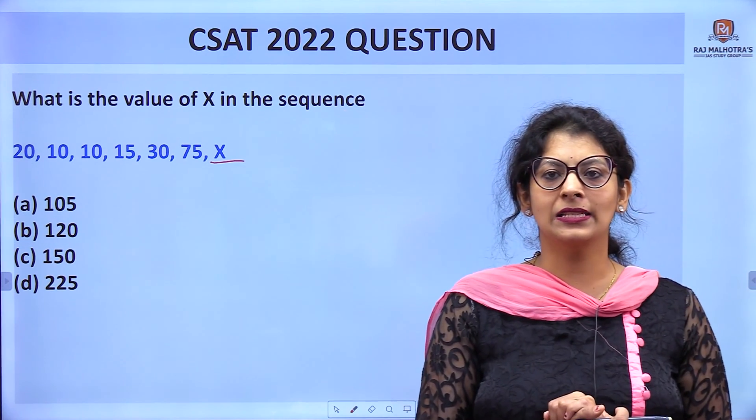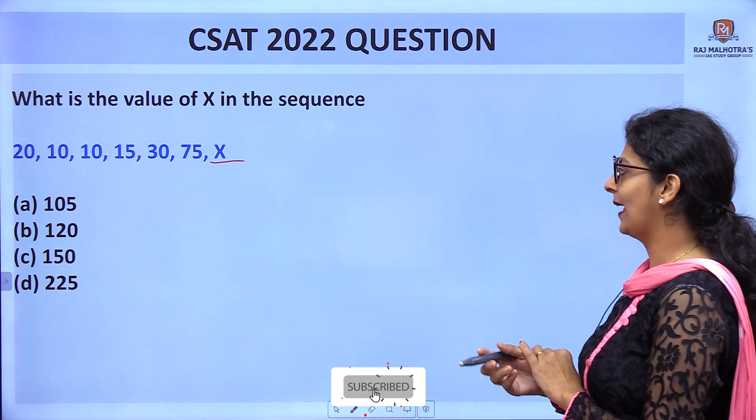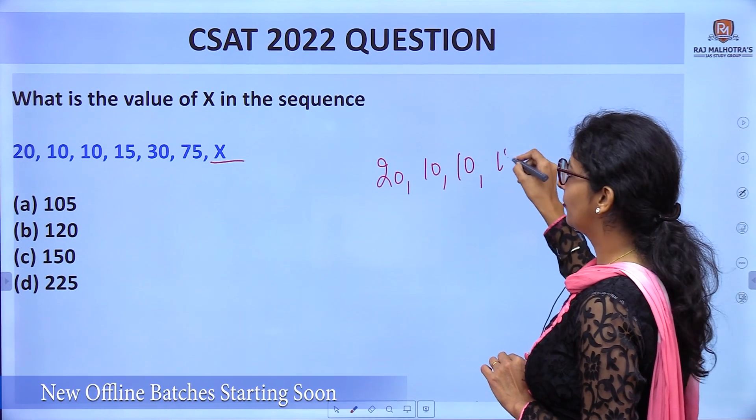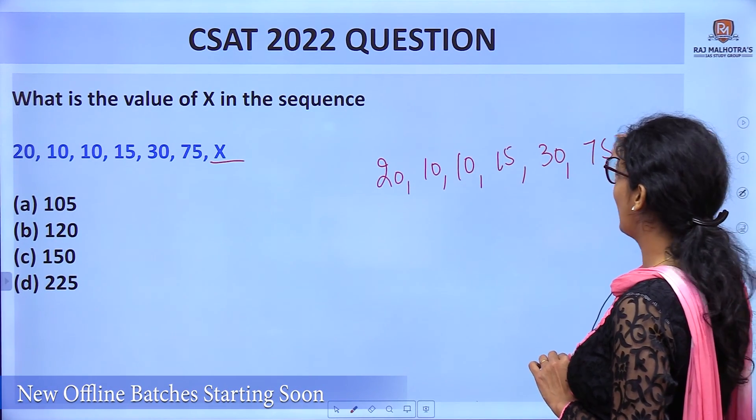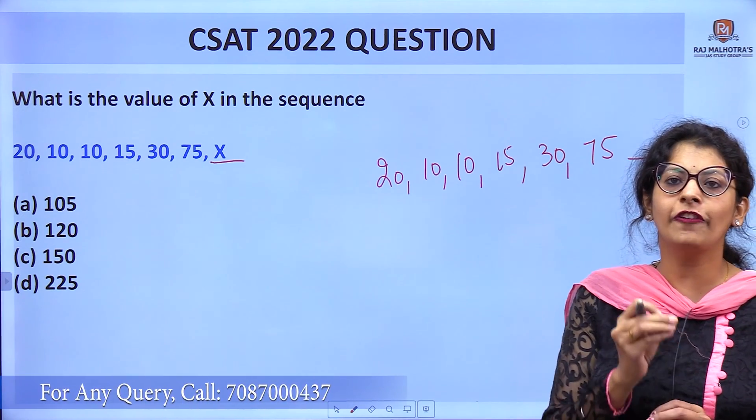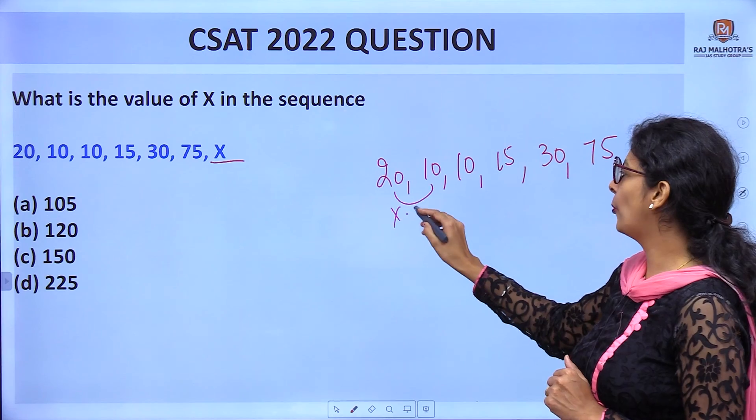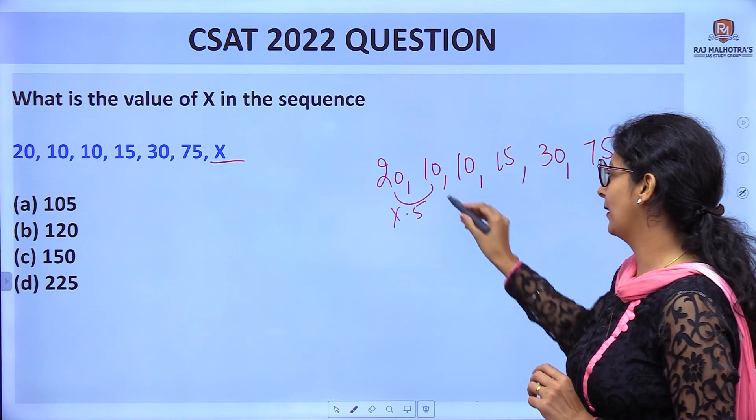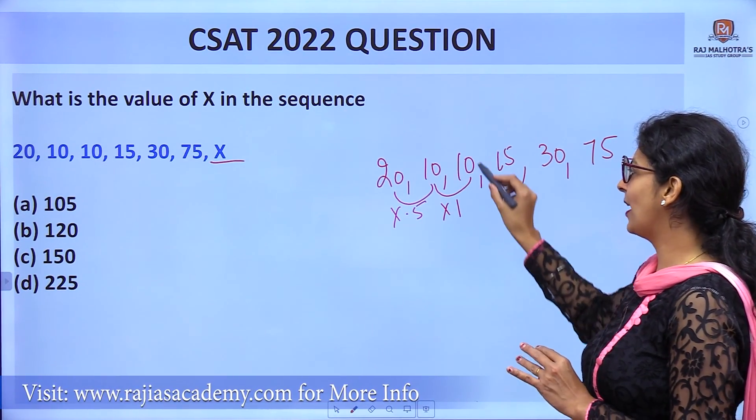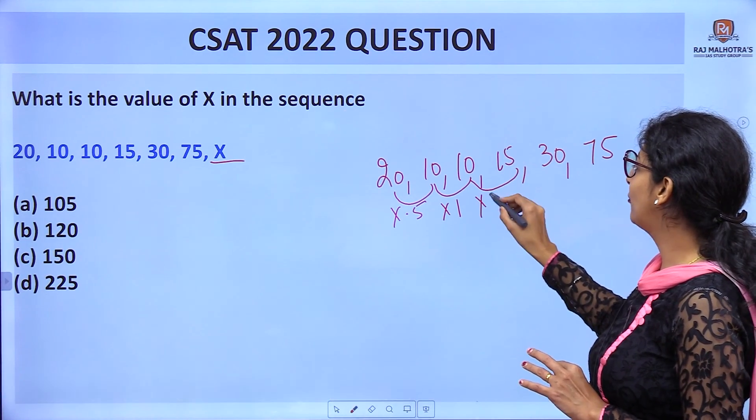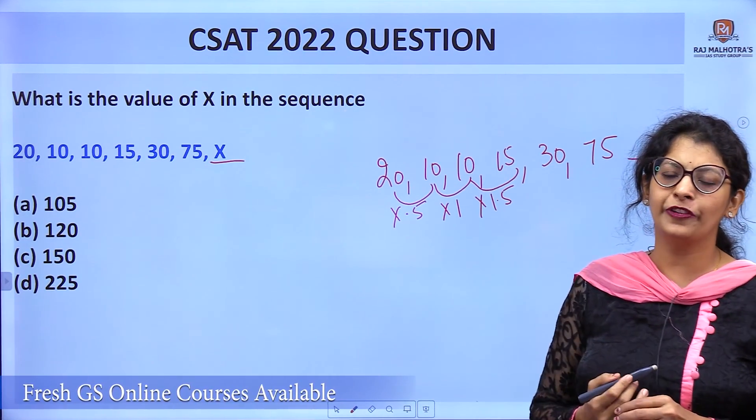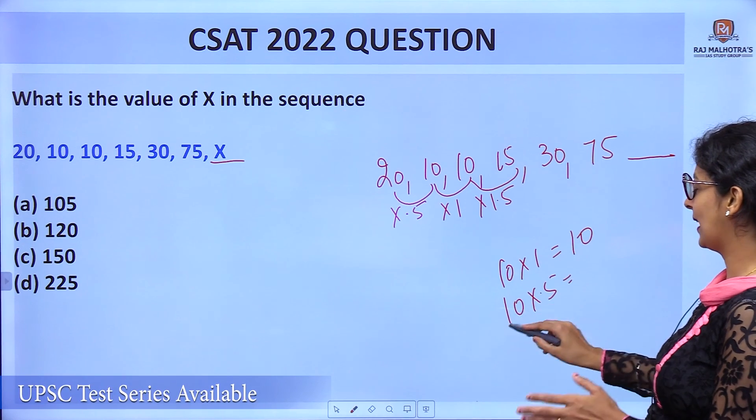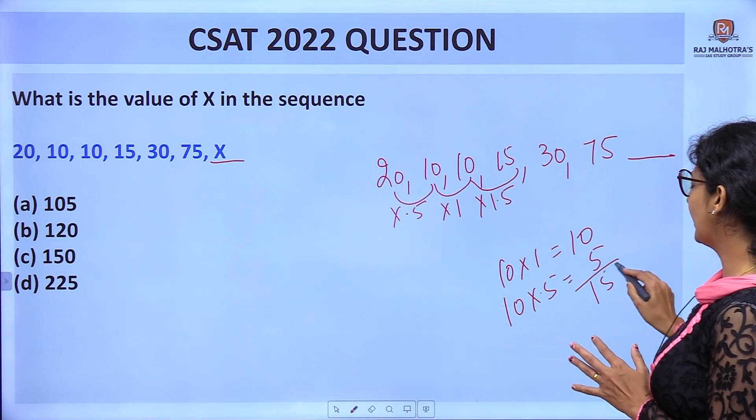Let's check the first question. The series is 20, 10, 10, 15, 30, 75, x. First, we analyze the series. In this series there is multiplication. 20 is multiplied by 0.5, which gives 10. Next is multiplied by 1.5: 10 × 1.5 = 10 × 1 plus 10 × 0.5 = 10 + 5 = 15.